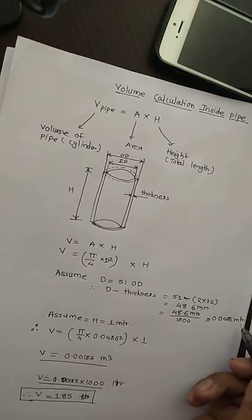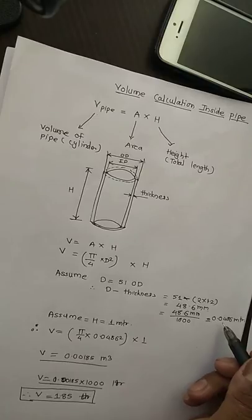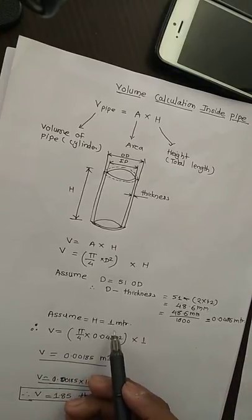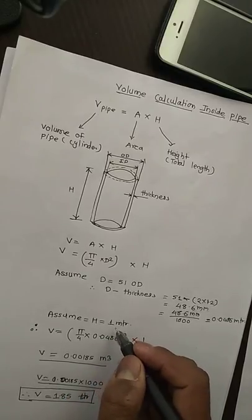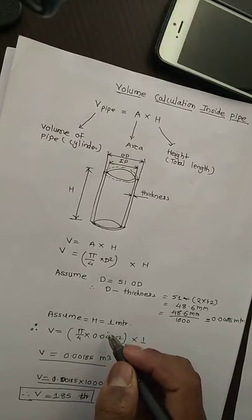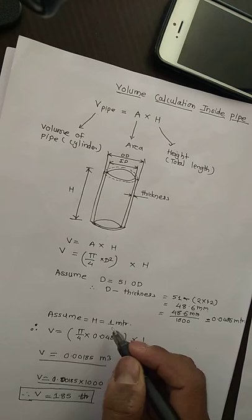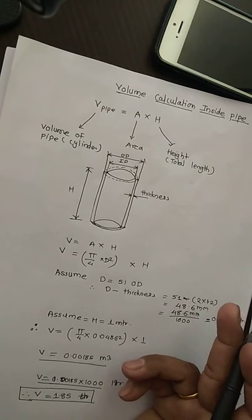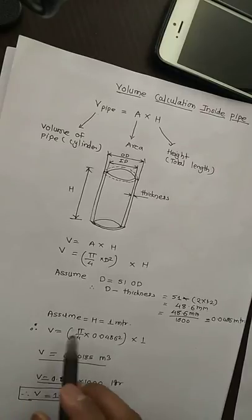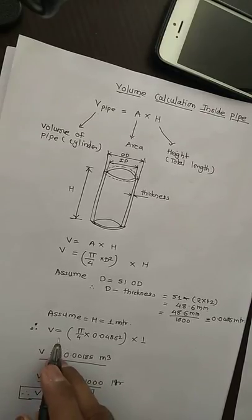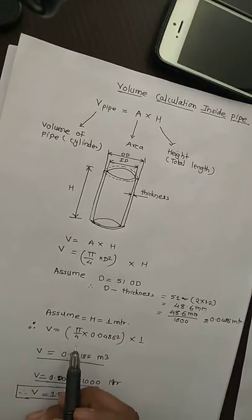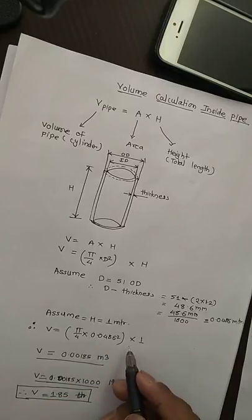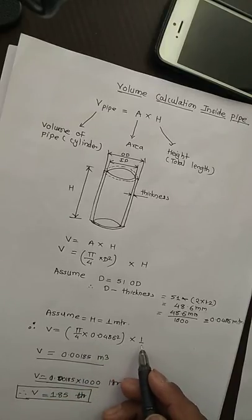...it will convert into meters: 0.0486 meters. Assume height = 1 meter. It may vary depending upon your total length, you can change it from 1 to 150 as per your design. So we put all the values inside the formula: V = π/4 × 0.0486² × 1.